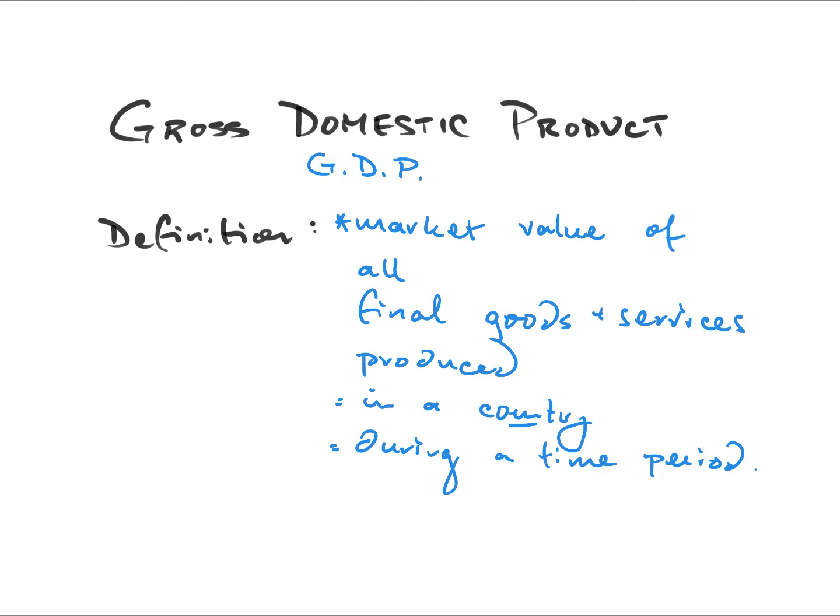GDP is the market value of what a country produces. The way we summarize how much a country produces is not like listing: the United States produced 12,000 tons of wheat, 500 cars, 7,000 haircuts. We don't describe every individual item. Instead, GDP summarizes what a country produces in terms of market value.